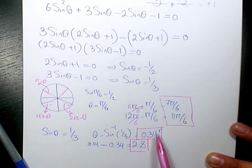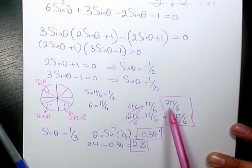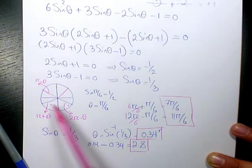It's going to be 0.34 radian, 2.8, we have 7 pi over 6 which is this one, and 11 pi over 6 which is the one in quadrant 4.